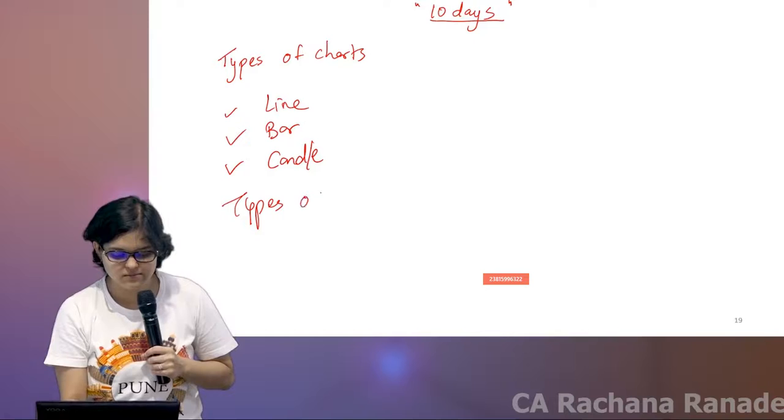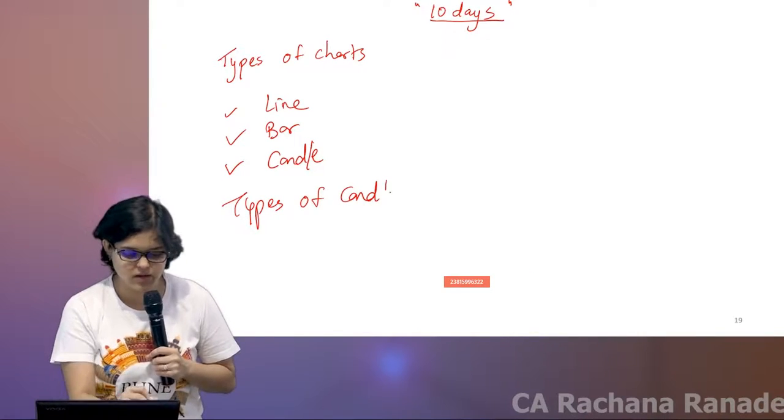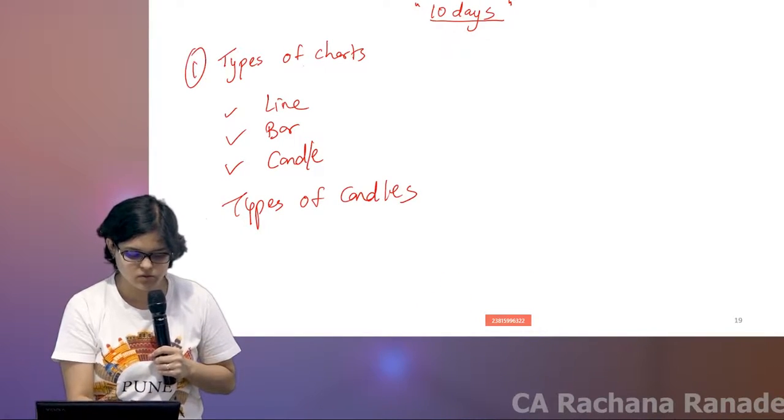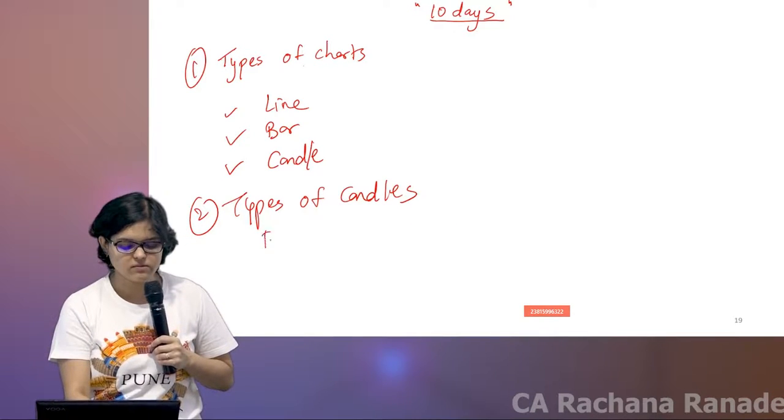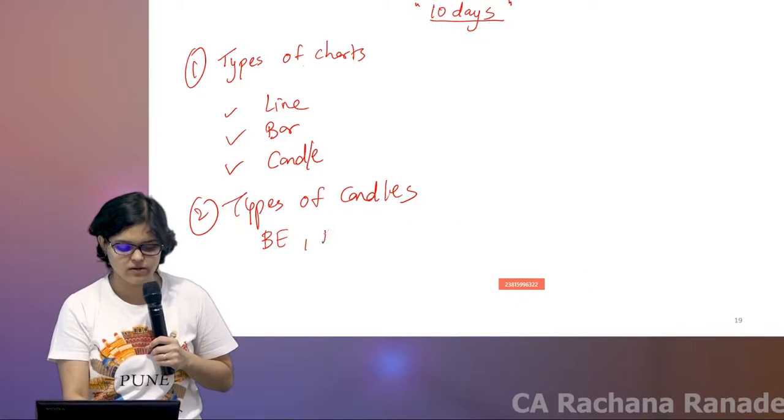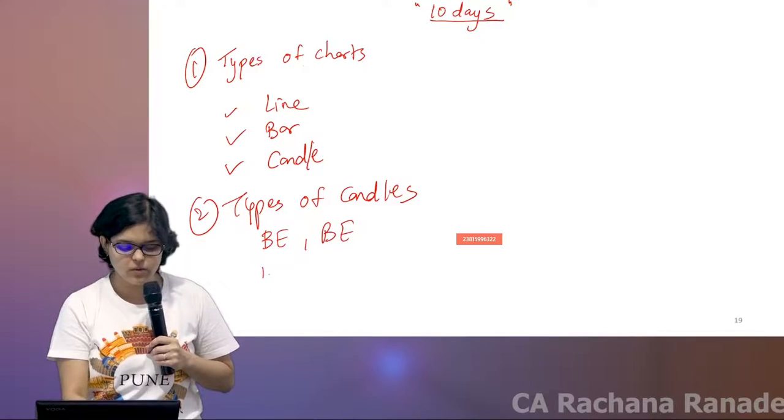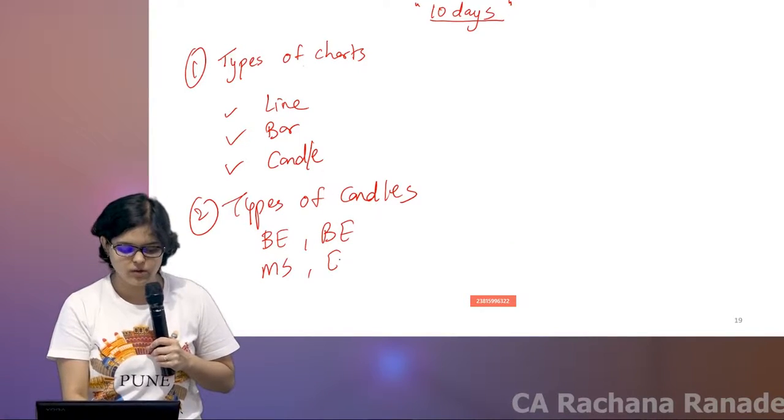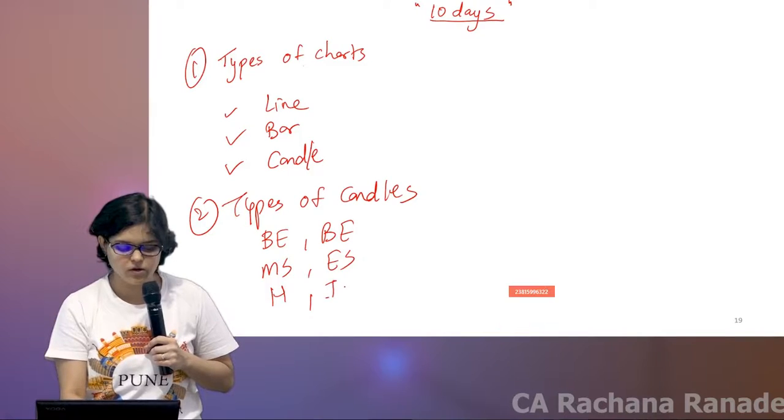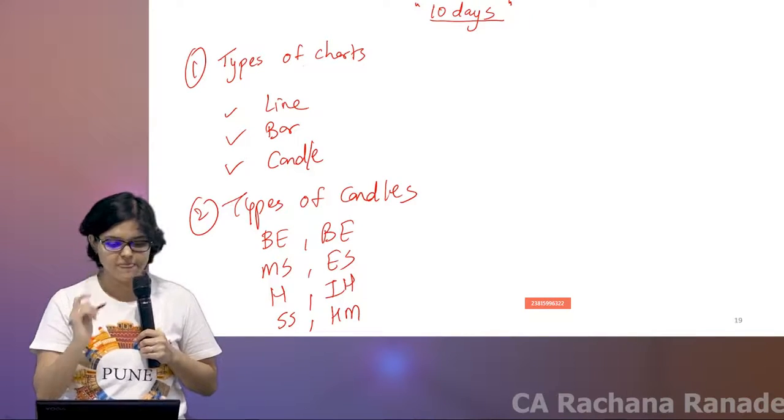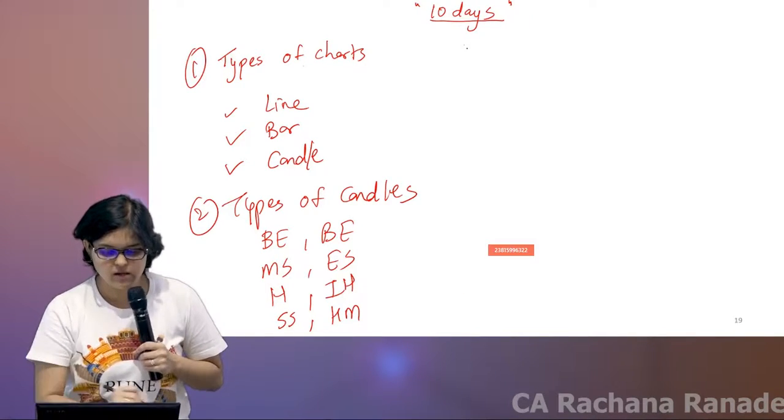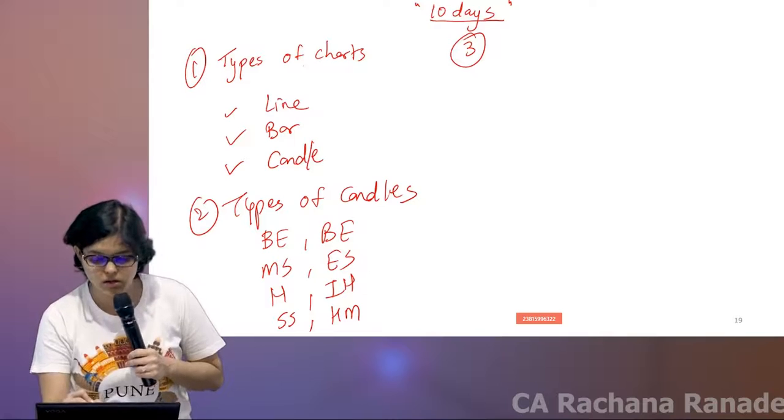In types of candles we talked about bullish engulfing, bearish engulfing, morning star, evening star, hammer, inverted hammer, shooting star, and hanging man. You remember that? Shooting star, hanging man.